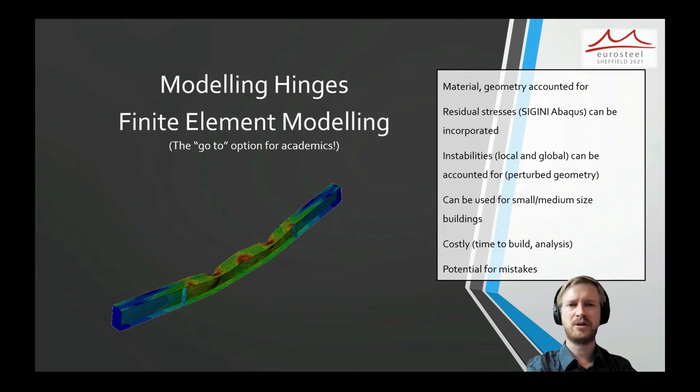Local and global instabilities can be accounted for using perturbed geometries. You can use this to model either single beams like this as well as small or medium sized structures.